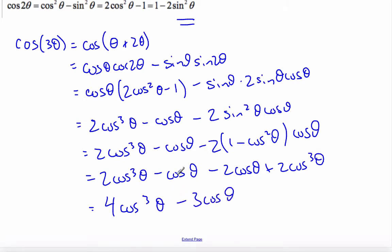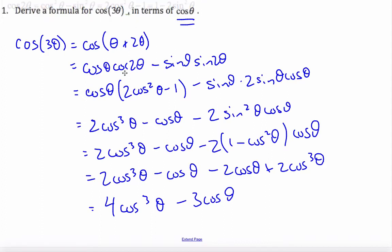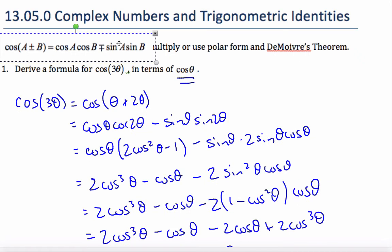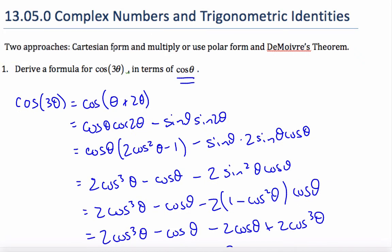So now, looking at the question again, I was supposed to derive a formula for cosine 3 theta in terms of cosine theta, which is what I've done. I've chosen to use the approach of Cartesian form and trig identities and just multiply it out.